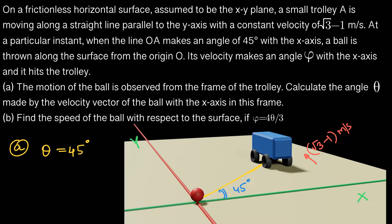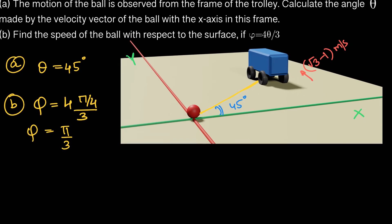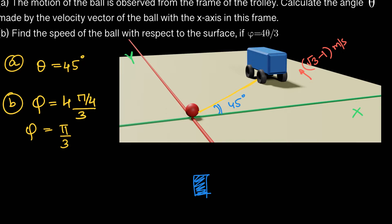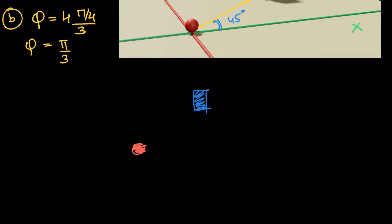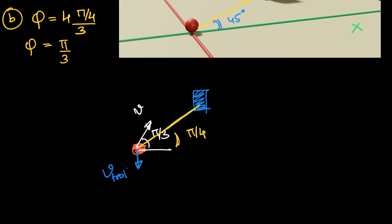In the second part, we are asked for the speed of the ball with respect to the surface if φ equals 4θ/3. Since θ = π/4, this gives φ = π/3. The ball's velocity is at angle π/3 in the frame of the trolley, and it meets the trolley at angle π/4. In the trolley's frame, the velocity of the ball equals the velocity of the ball minus the velocity of the trolley, and the resultant of these two vectors is along the line at π/4.